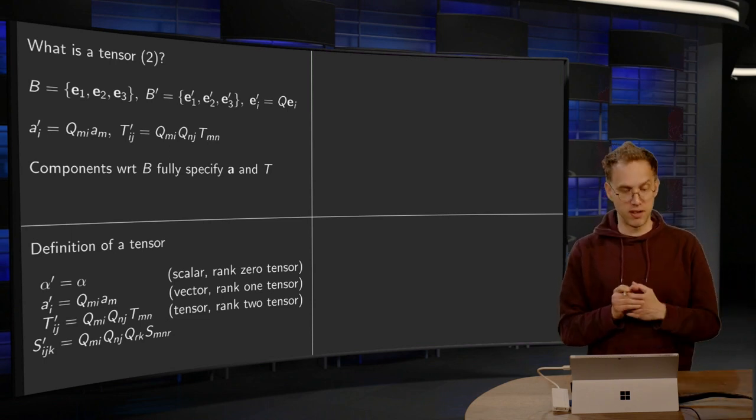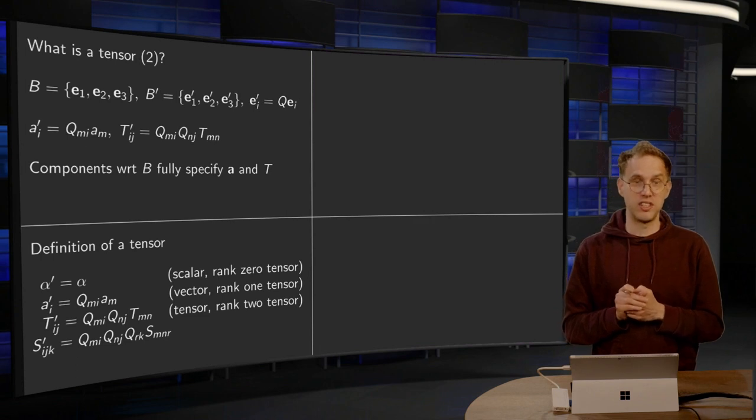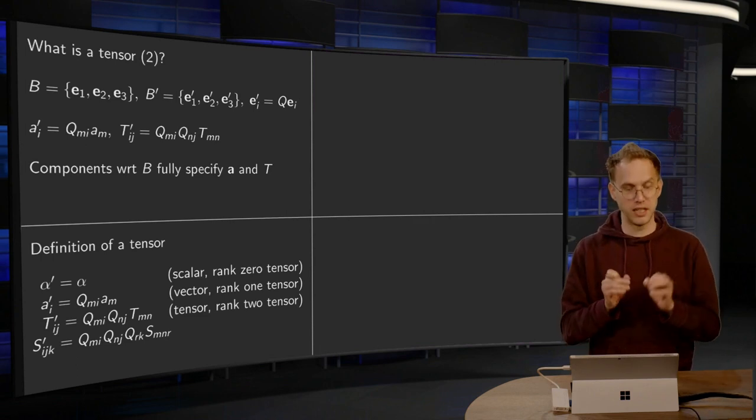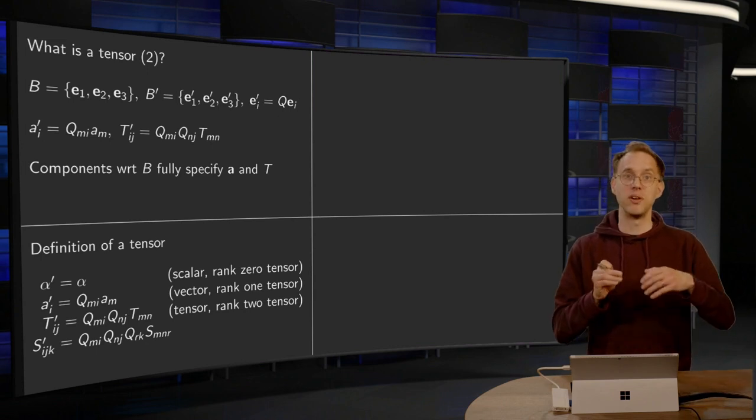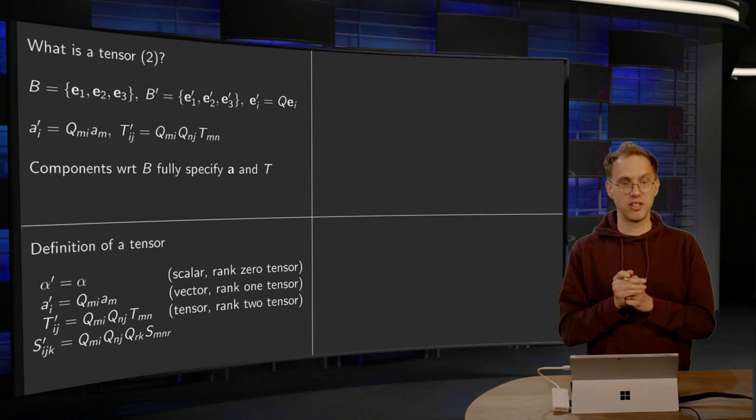We have seen that if we have a tensor or rank two tensor, that Tij' equals Qmi Qnj Tmn. So that's what we call a rank two tensor. That's how it transforms.